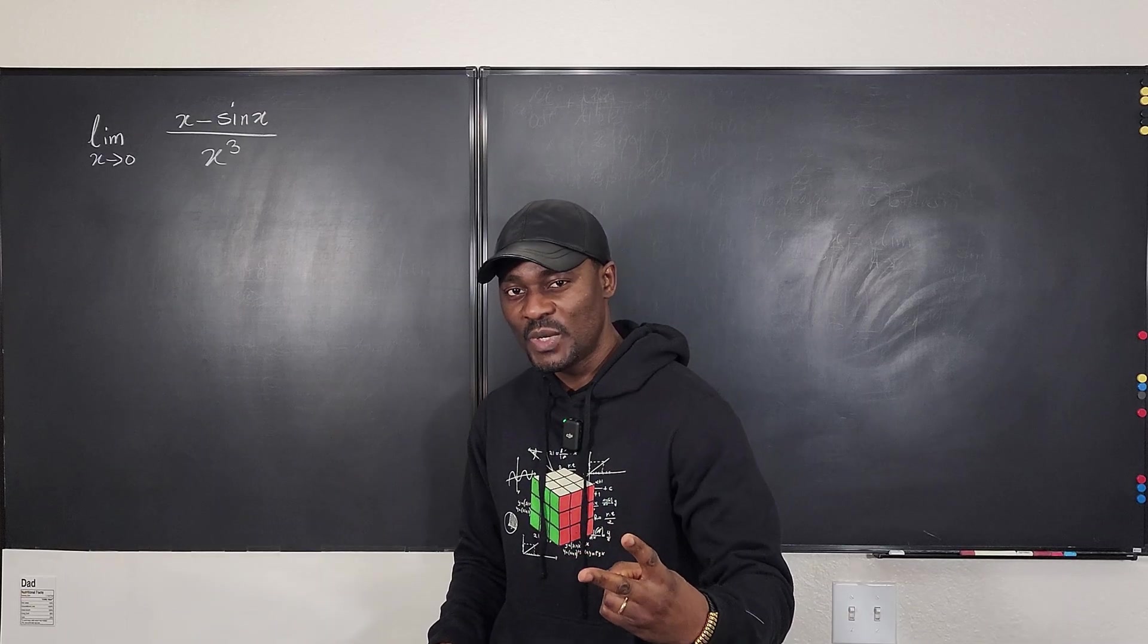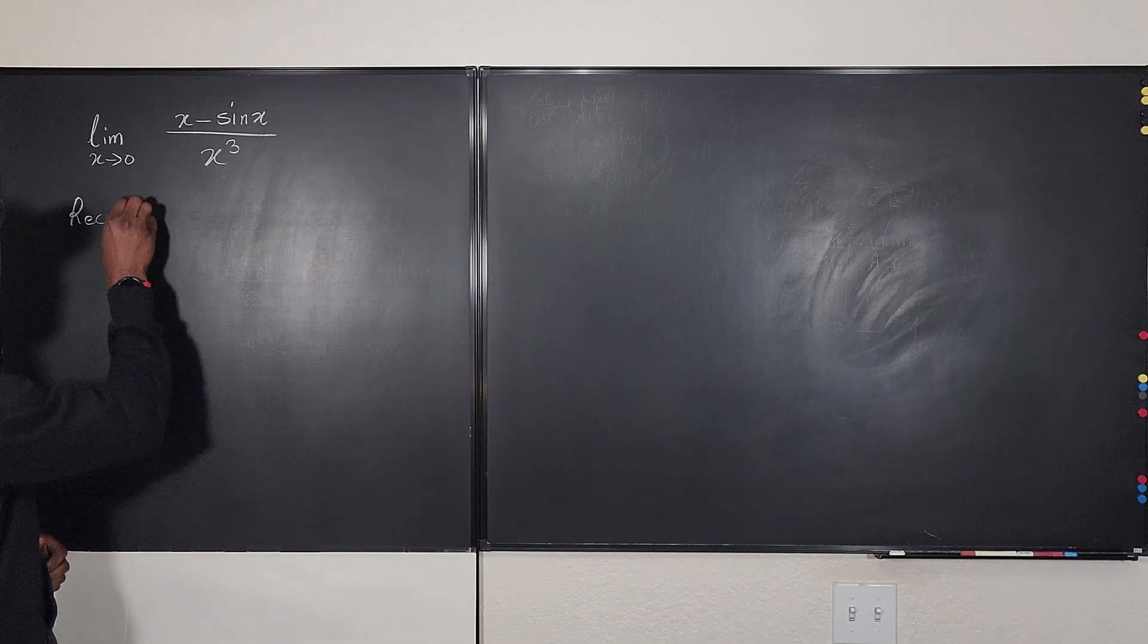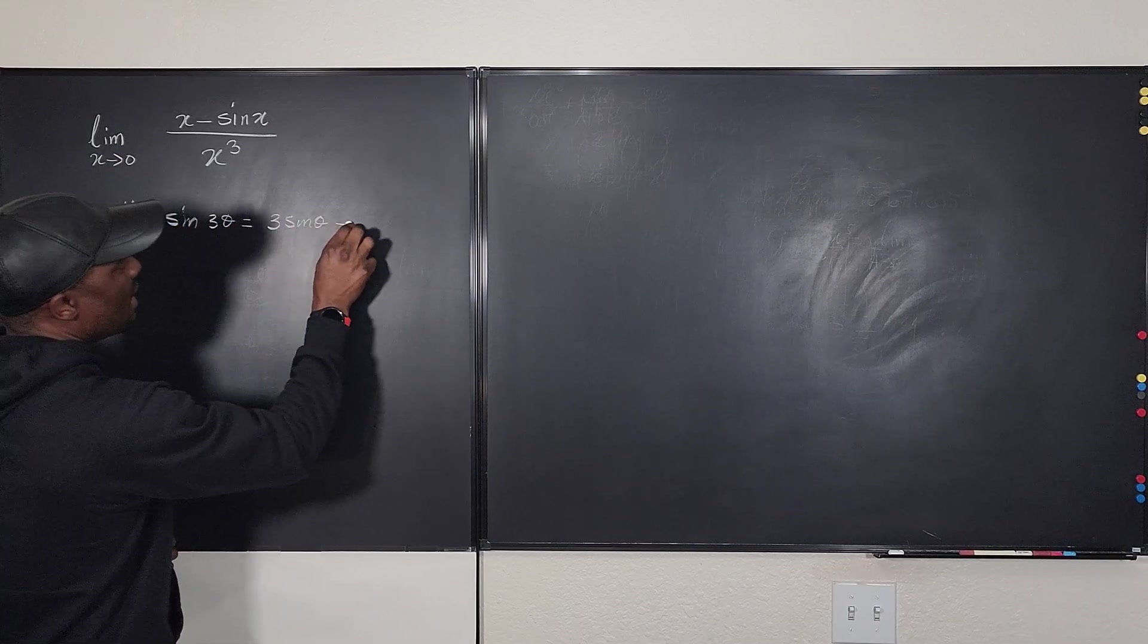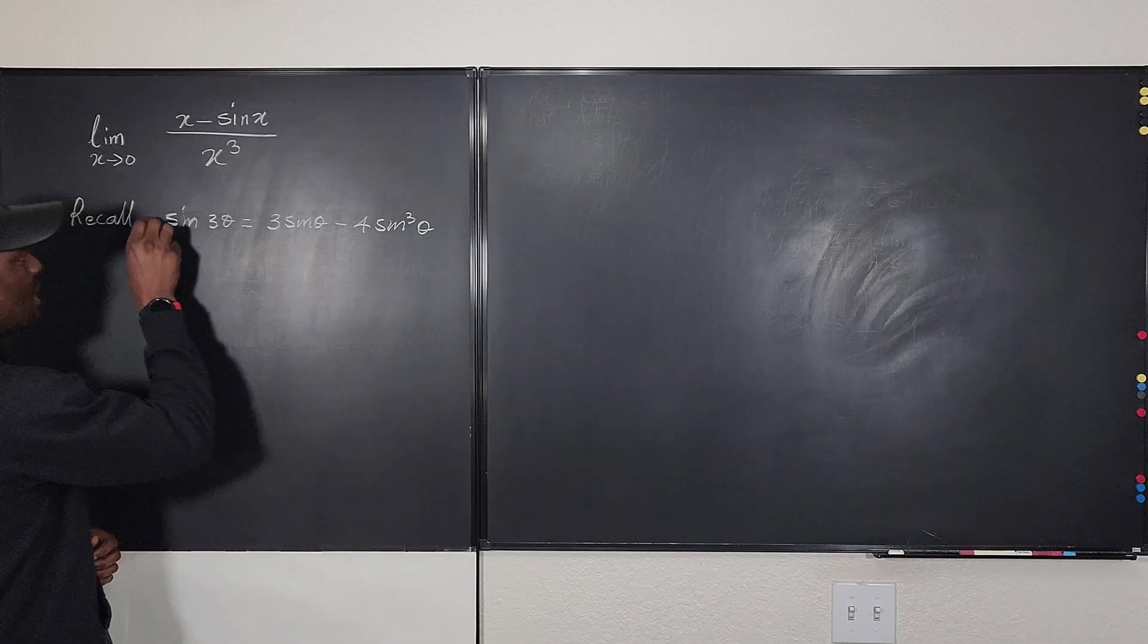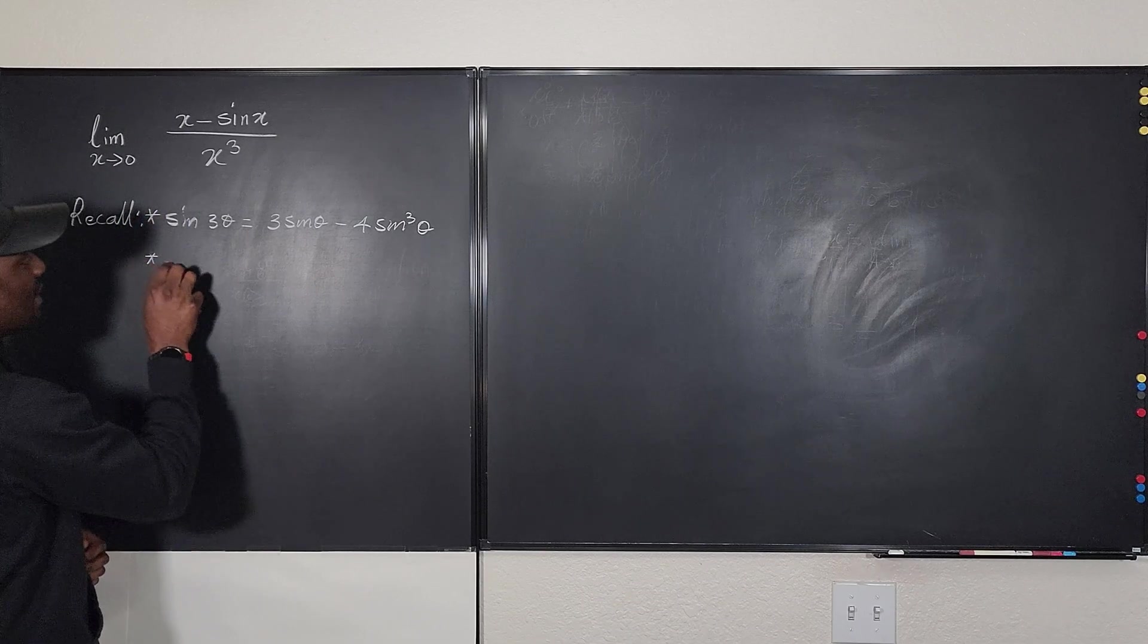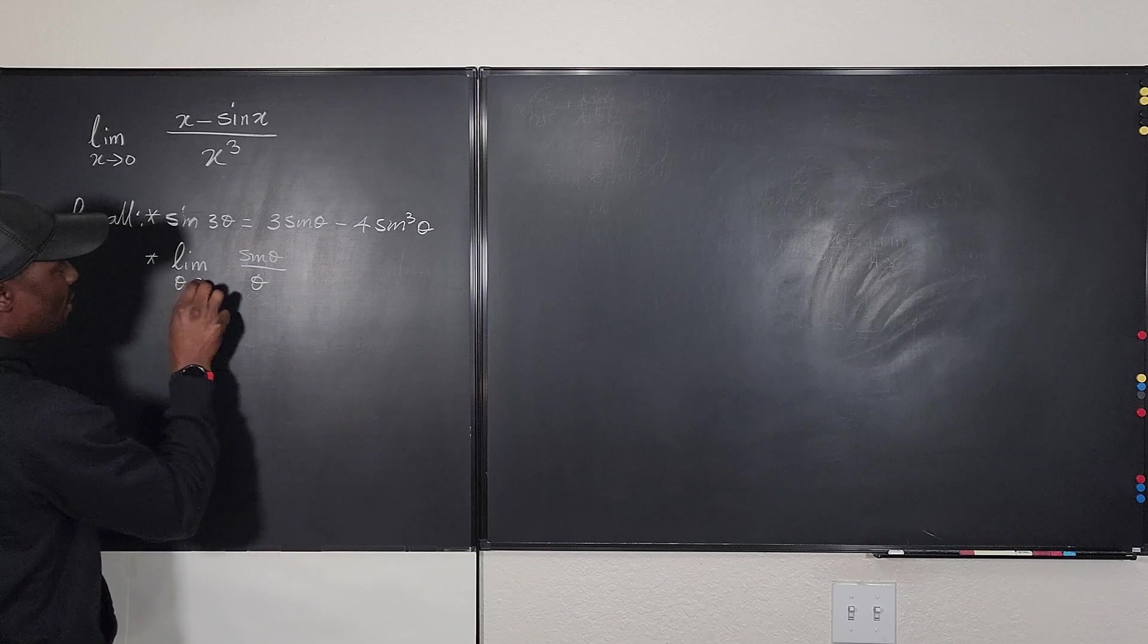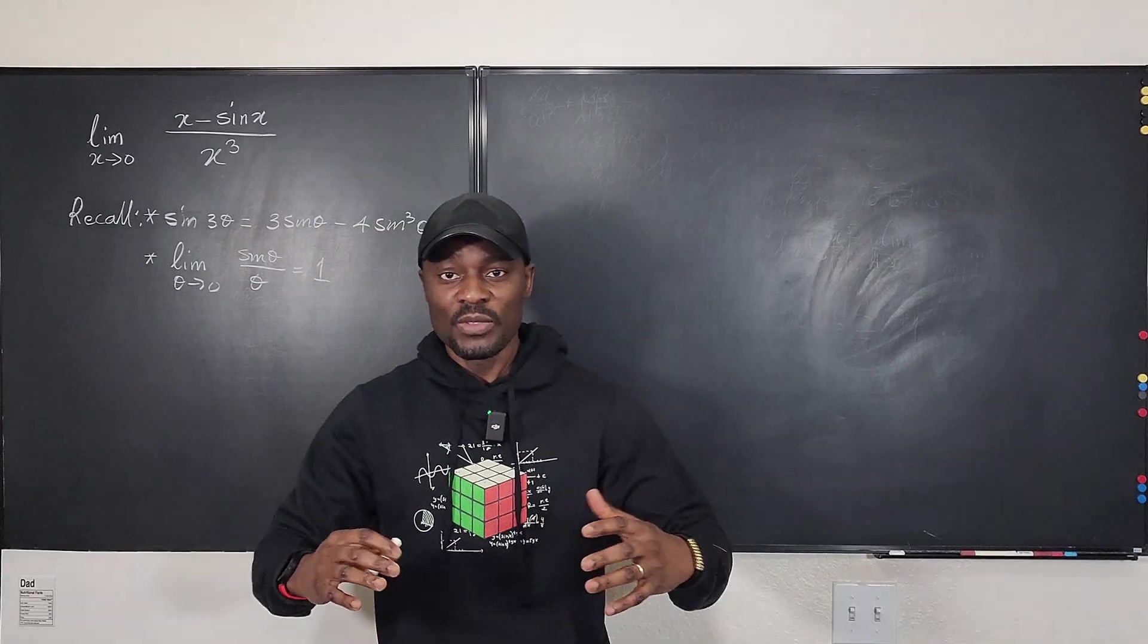So the two key things we need are: you need to recall that the sine of 3 theta is equal to 3 sine theta minus 4 sine cubed theta. This is important. And you also want to recall that the limit of sine theta over theta as theta goes to 0 is equal to 1. Once you're able to use these, then we're good.